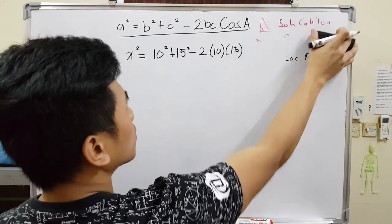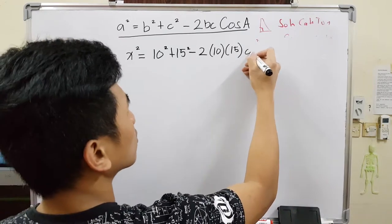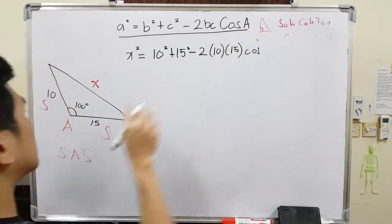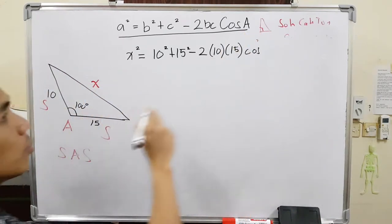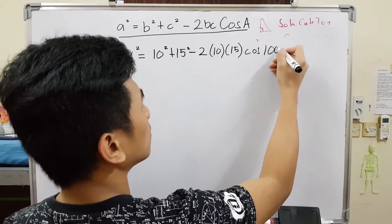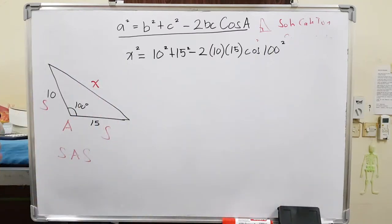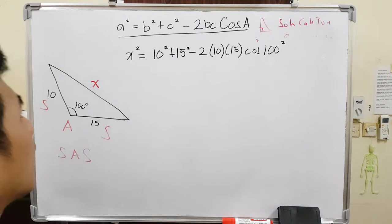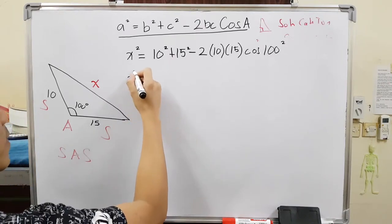They will give you the same answer. And then, just continuously copy, we have cosine a. So cosine a, when you say a, that is the angle in between them, which is 100 degrees. As simple as that. You can simplify this or you can put this directly on the calculator.